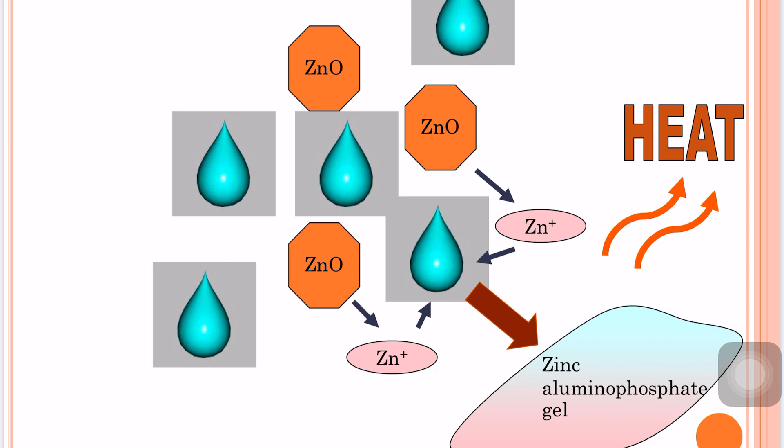To dissipate this heat, you must mix zinc phosphate on a cool glass slab, over a wider area, and in increments, so that the heat generated is effectively dissipated.